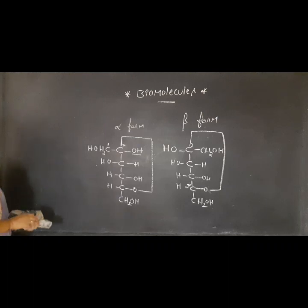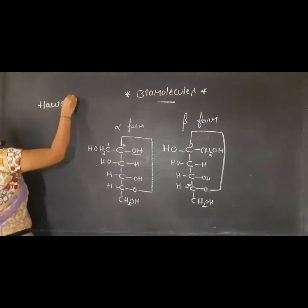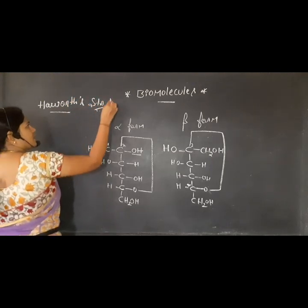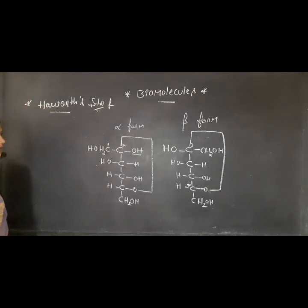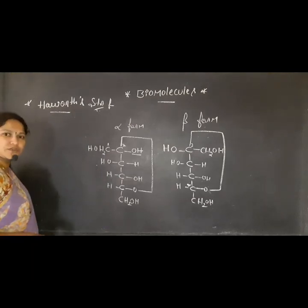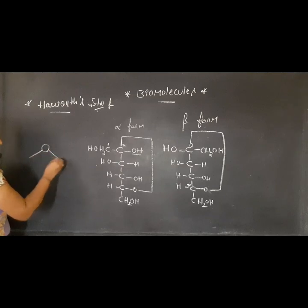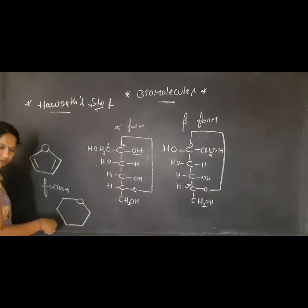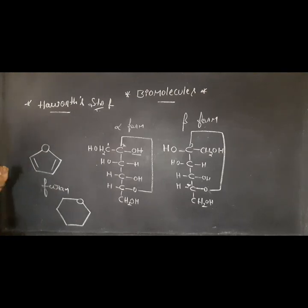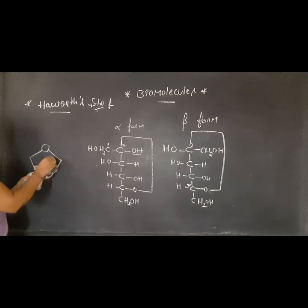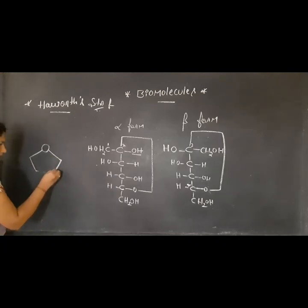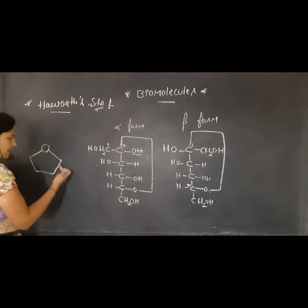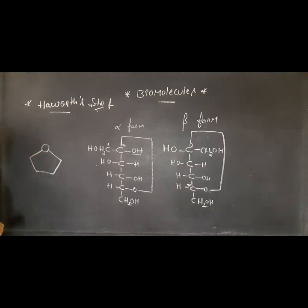Haworth is a projection — a scientist's name. To write the Haworth structure of fructose, we take furan as the analog, similar to how pyranose is the analog for glucose. Since fructose forms a five-member ring, we use furanose. The five-member ring has one oxygen and four carbon atoms. To write the left and right substituents, we write the line on the plane.